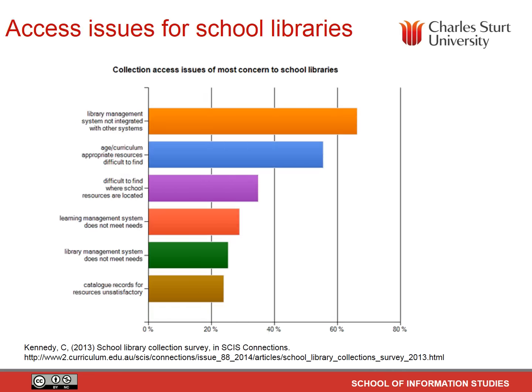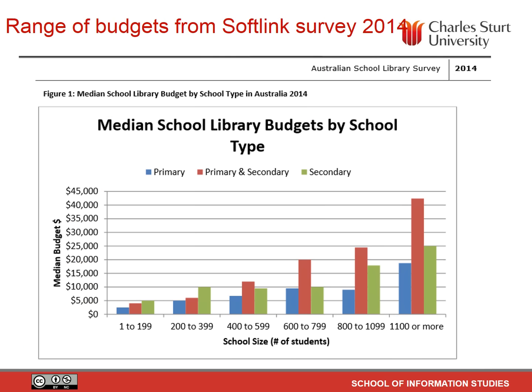These are the access issues for school libraries in facilitating access to resources. The top one is the library management system — OASIS, OLIVER, AMLIB, DESTINY — not being fully integrated with other systems. I guess we're talking about ClickView, Wheelers, Overdrive, etc. Though I do think that SCIS is working on Wheelers and Overdrive so that it can be integrated with your library management system. This one is from Softlink Australia.